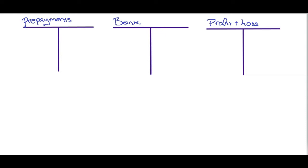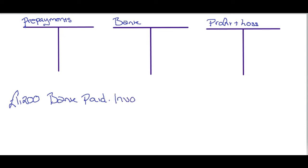In this instance, we have a payment for £1,200 that has gone through the bank already — so it's already been paid. If we look at the invoice, it is for electricity, so we know it's for £1,200.